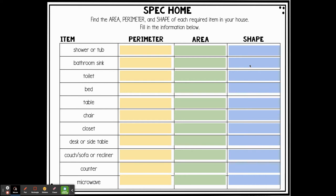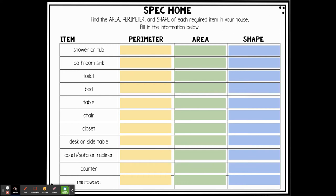We've talked about this recently in your everyday math lessons. What type of shape is it? Is it a quadrilateral? What type of quadrilateral? Is it a triangle? What kind of triangle? You also have the yard and the perimeter of the house space, wall one, wall two — however many walls you have — the four walls, outside wall, and your roof.